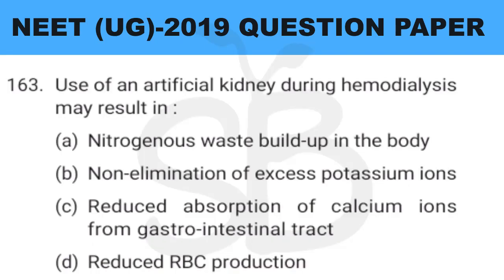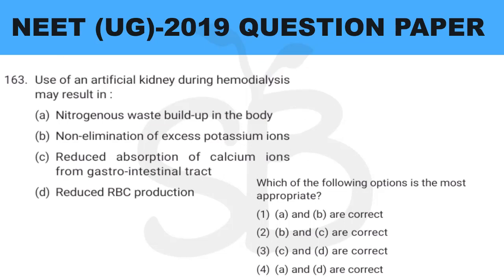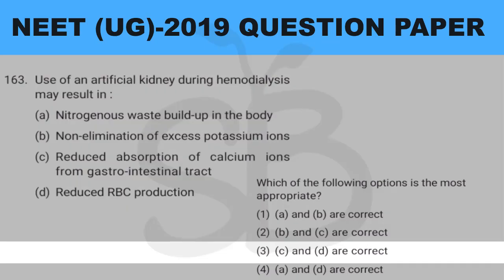Question number 163: use of an artificial kidney during hemodialysis may result in? This is from plus 1 biology chapter on excretory products and their elimination, page number 298, hemodialysis. Option A — nitrogen waste build-up in the body — that is a wrong statement. Option B — non-elimination of excess potassium ions — that is also a wrong statement. So the correct answer is option 3: C and D.